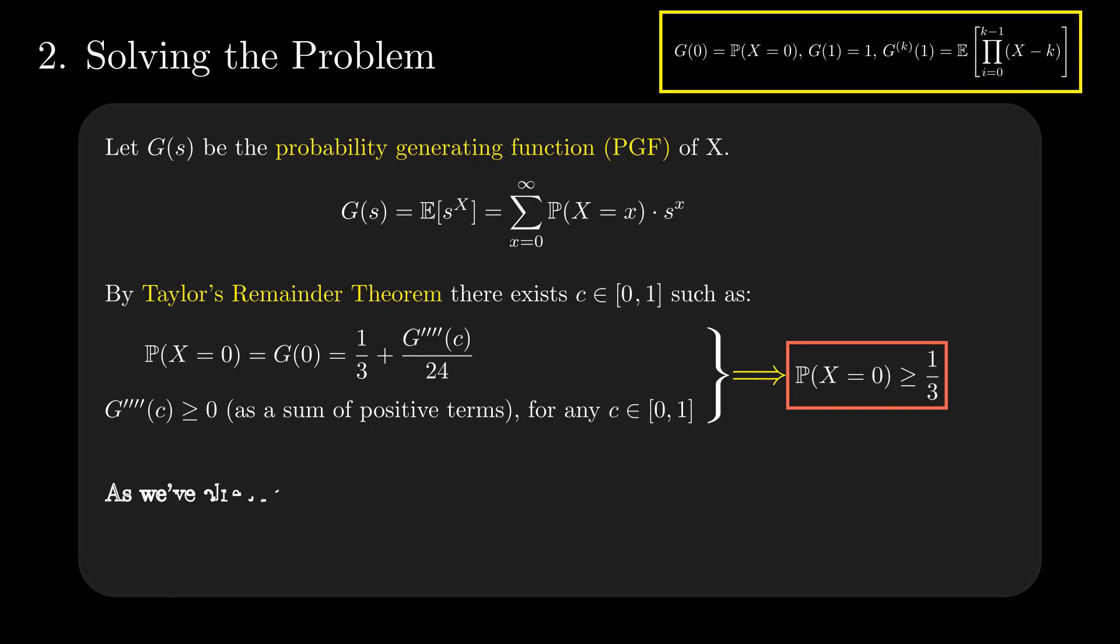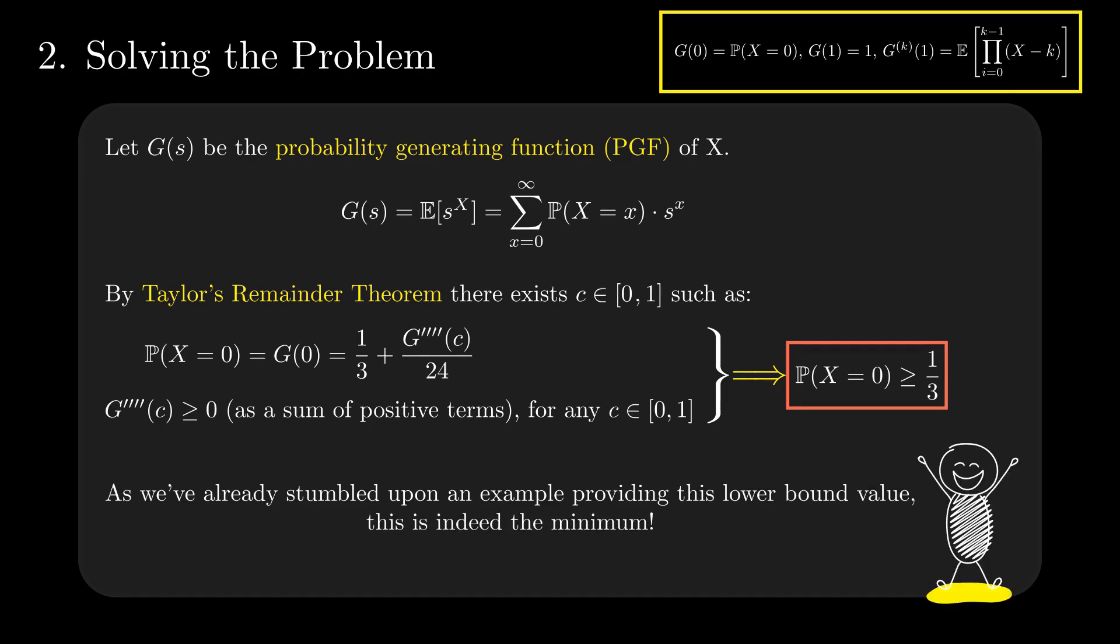We would now have had the task of finding an example of a random variable that achieves this minima, but we are lucky that we already found it in the exploratory part of this question.